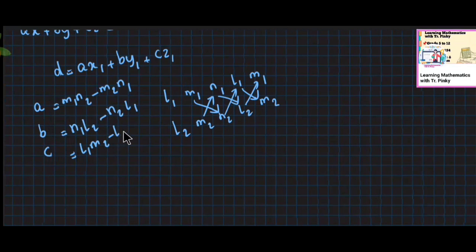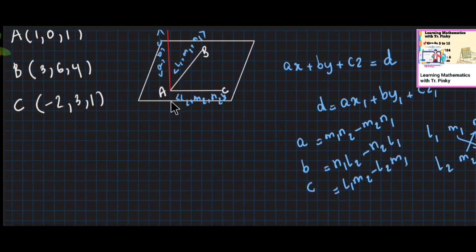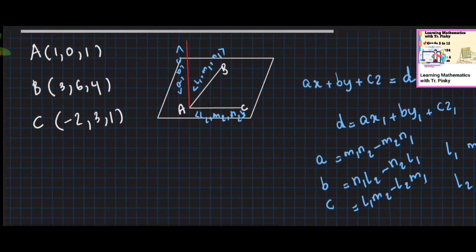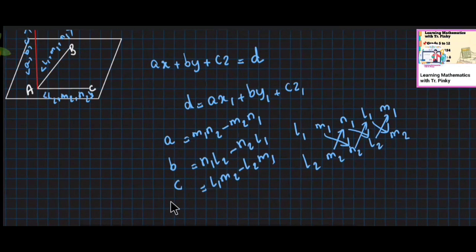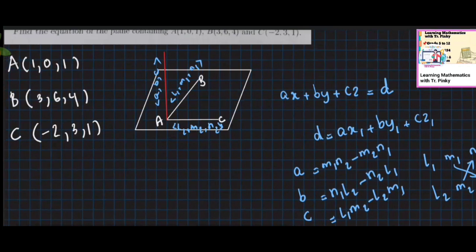So L1·M2 minus L2·M1 gives us C. The plane equation uses point (x1, y1, z1). You place L1, M1, N1 to the left and L2, M2, N2 to the left in the determinant, then it will be done.